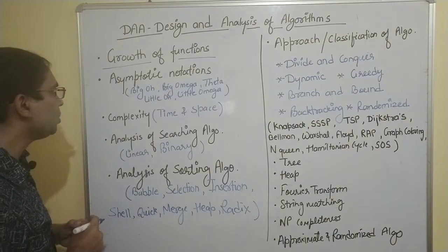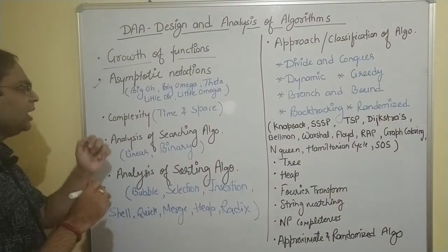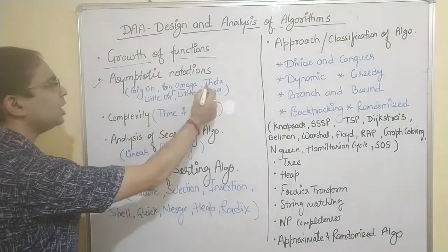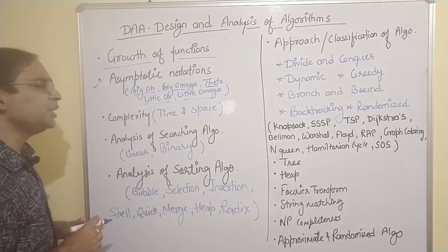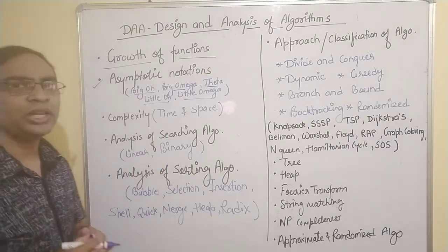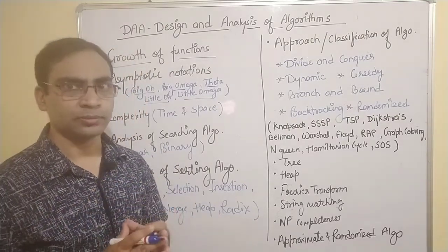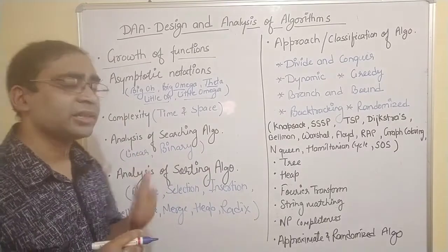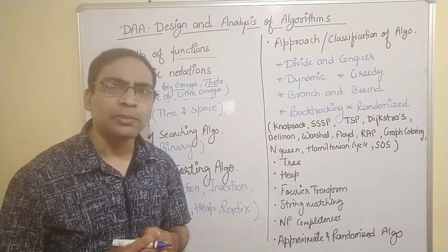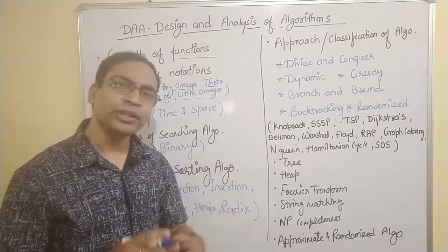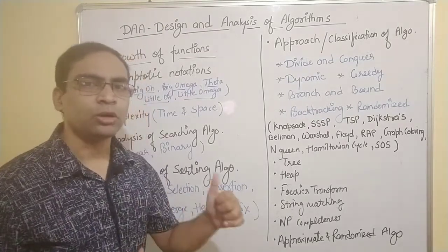The next important topic is asymptotic notations. Here we have Big O notation, Big Omega, Theta notations, then Little O notation, and Little Omega notation. These are asymptotic notations used to assess the performance of an algorithm. We will apply these asymptotic notations on different algorithms and analyze their performance. Don't worry — we will learn everything in detail with a lot of ease.